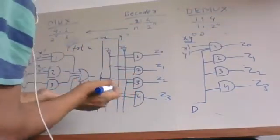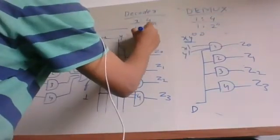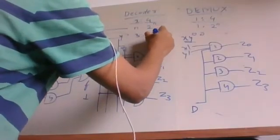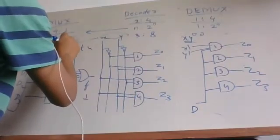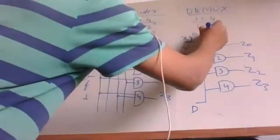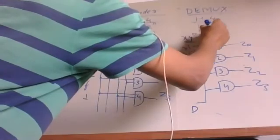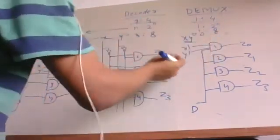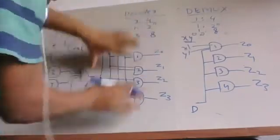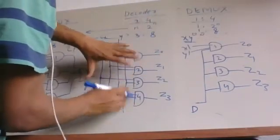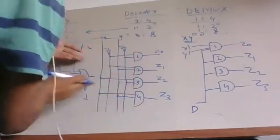For example, if you have three inputs, the decoder will be 3-to-8, the multiplexer will be 8-to-1, and the demultiplexer will be 1-to-8. It's very simple: make the decoder first, which generates the min terms.